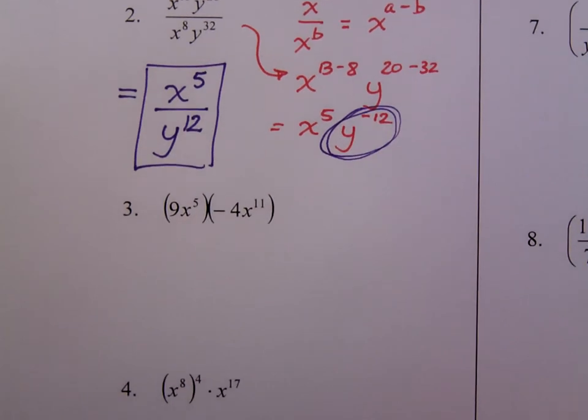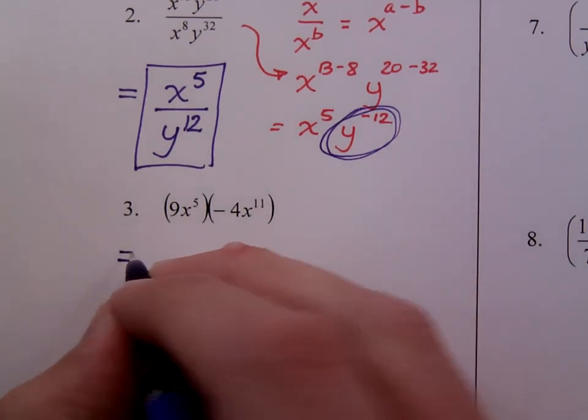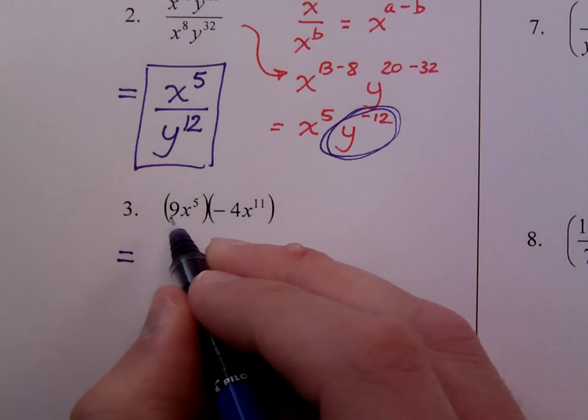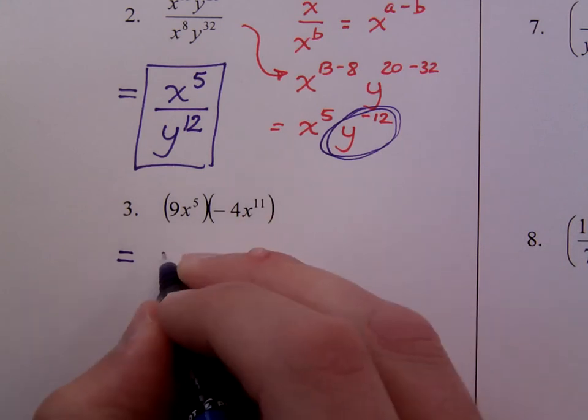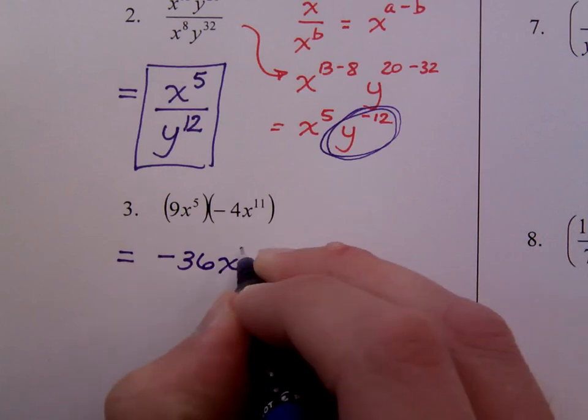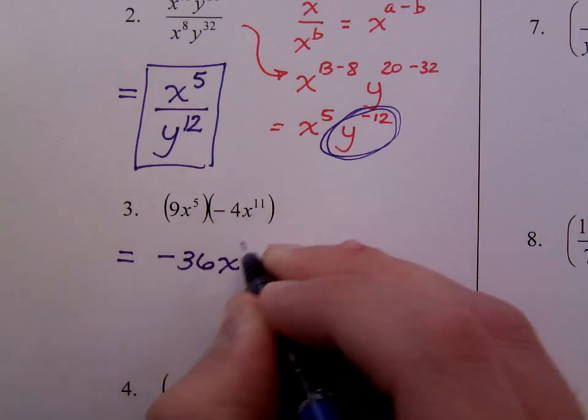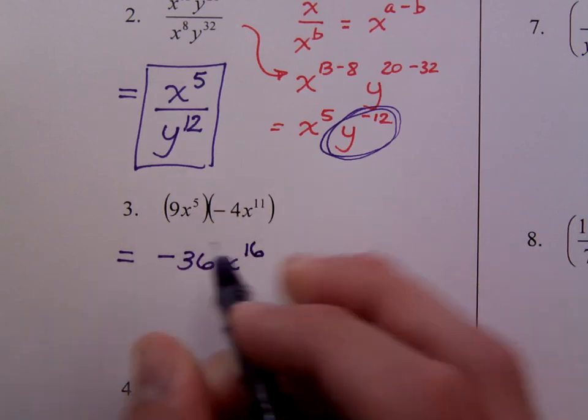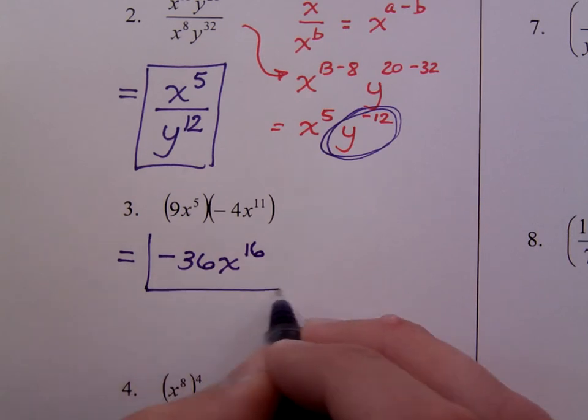We have something like number 3. It's all multiplication. All of this is connected. So 9 times negative 4 is negative 36. Then I have x to the, there's 5 and 11 factors, so that's 16 factors all together. So negative 36 x to the 16th.